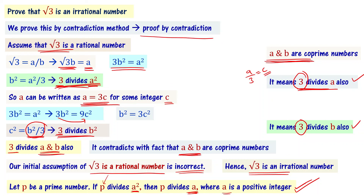We started by assuming root 3 is a rational number, but this led to a contradiction with the co-prime definition. Therefore, root 3 is an irrational number. This is how we prove it using the proof by contradiction method.